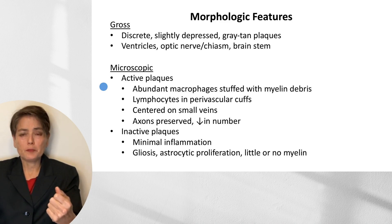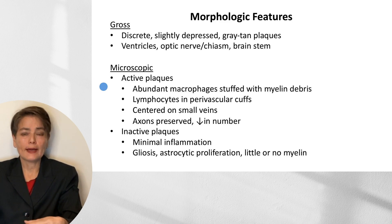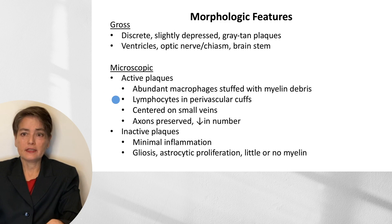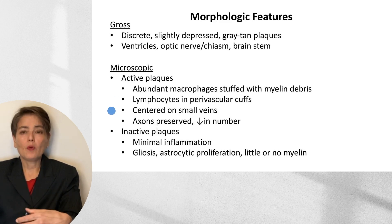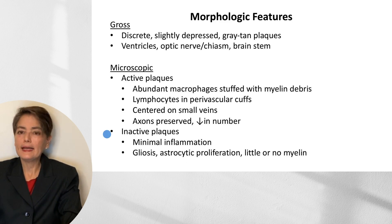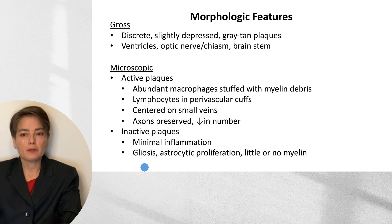Active plaques represent areas of active inflammation. If a patient presents with unilateral vision changes due to optic neuritis secondary to multiple sclerosis, a biopsy of that lesion would show abundant macrophages filled with myelin debris, abundant lymphocytes in perivascular cuffs often centered on small veins, and preservation of axons, which may be slightly reduced in number. Once the optic neuritis resolves and an inactive plaque is biopsied, you would see minimal inflammation, gliosis, astrocytic proliferation, and minimal myelin.